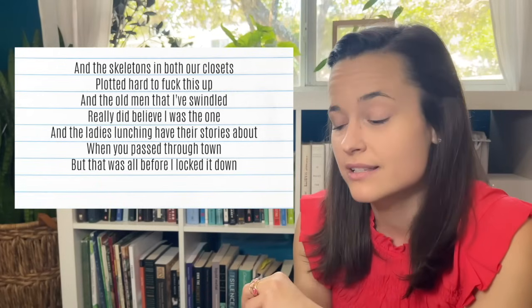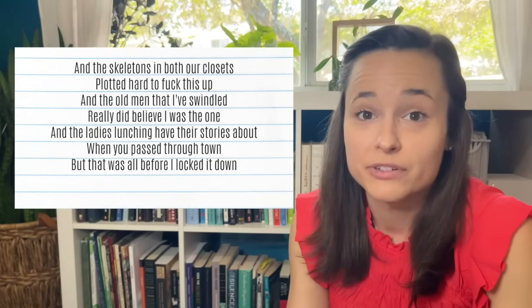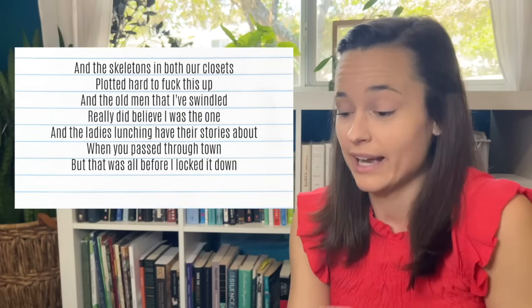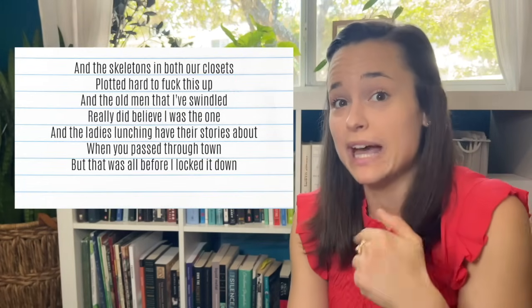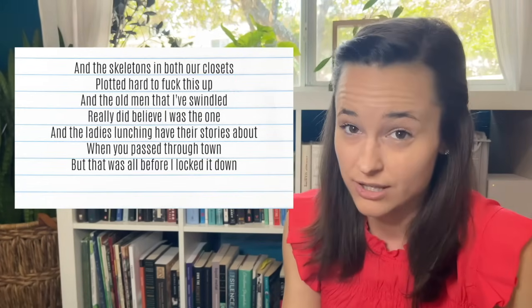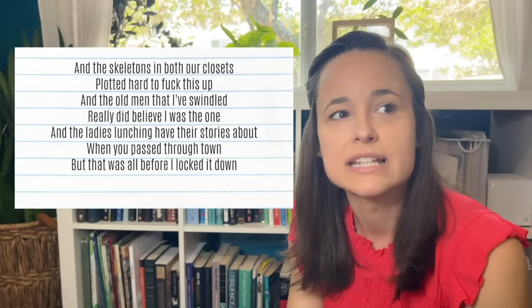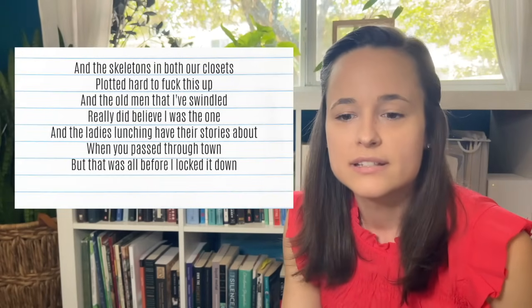So she's kind of describing the skeletons in the closet, why it might mess up their relationship. Because in the past, these people really thought I was the one like I made a big impression. And now if we're doing that with each other, can we really trust each other? Interesting. But she says that was all before I locked it down. So locking it down implies that she's committed to this person now, but I'm skeptical.